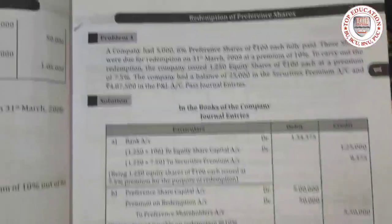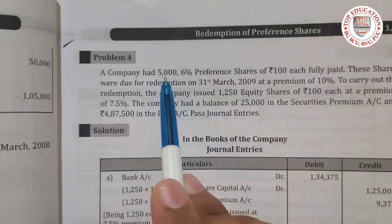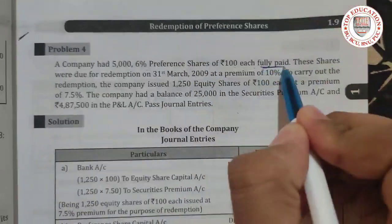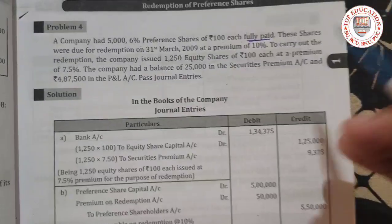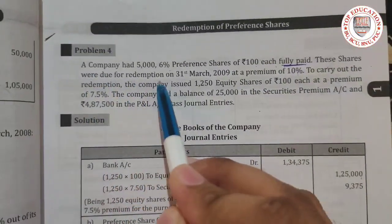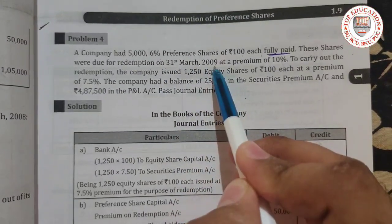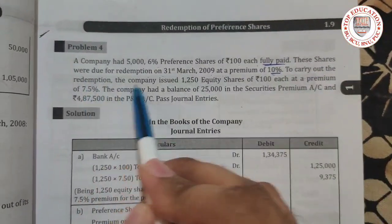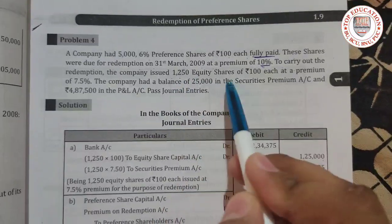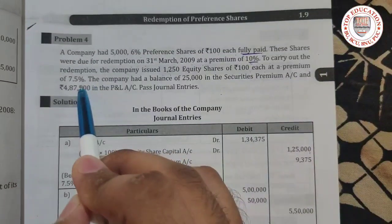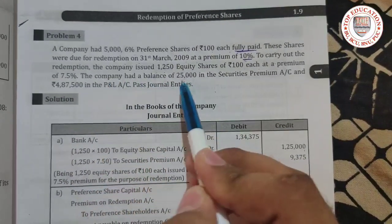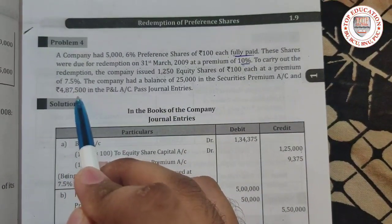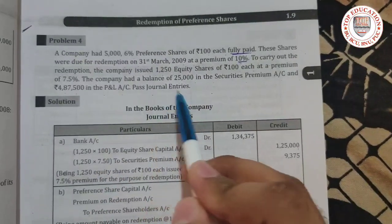This question and answer is very easy. A company has 5,000 6% preference shares of ₹100 each, fully paid. These shares were due for redemption on 31st March 2009 at a premium of 10%. To carry out the redemption, the company issued 1,250 equity shares of ₹100 each at a premium of 7.5%. The company had a balance of ₹25,000 in the securities premium account and ₹4,87,500 in the profit and loss account. Pass general entries.